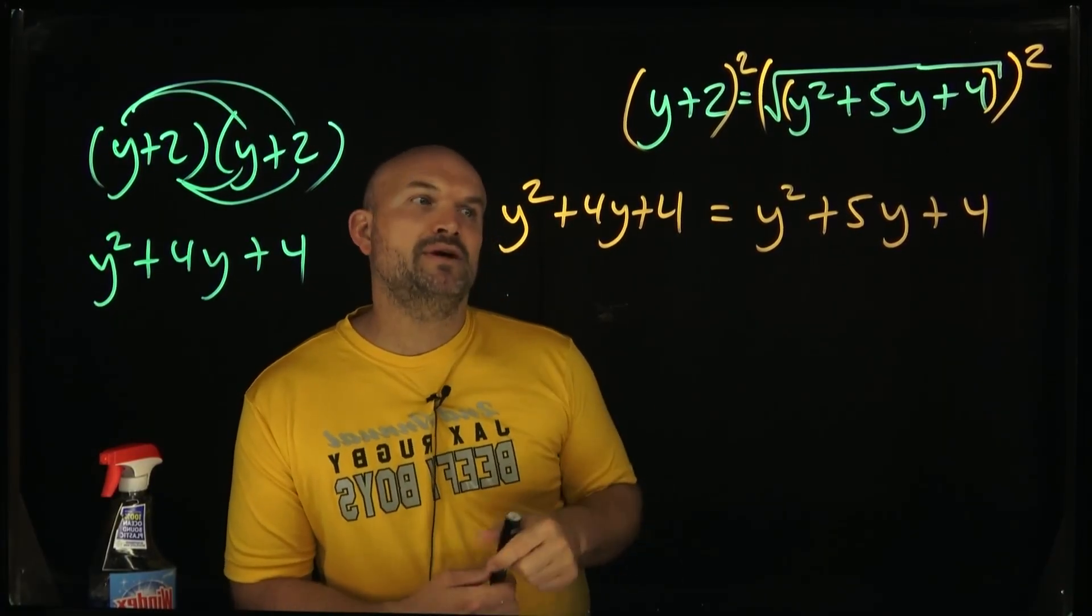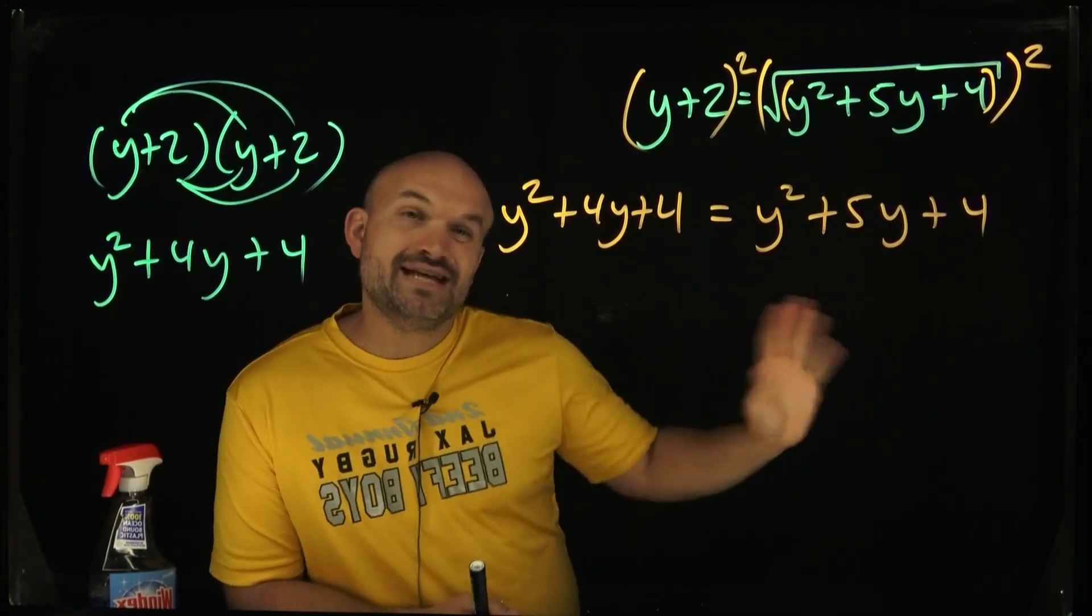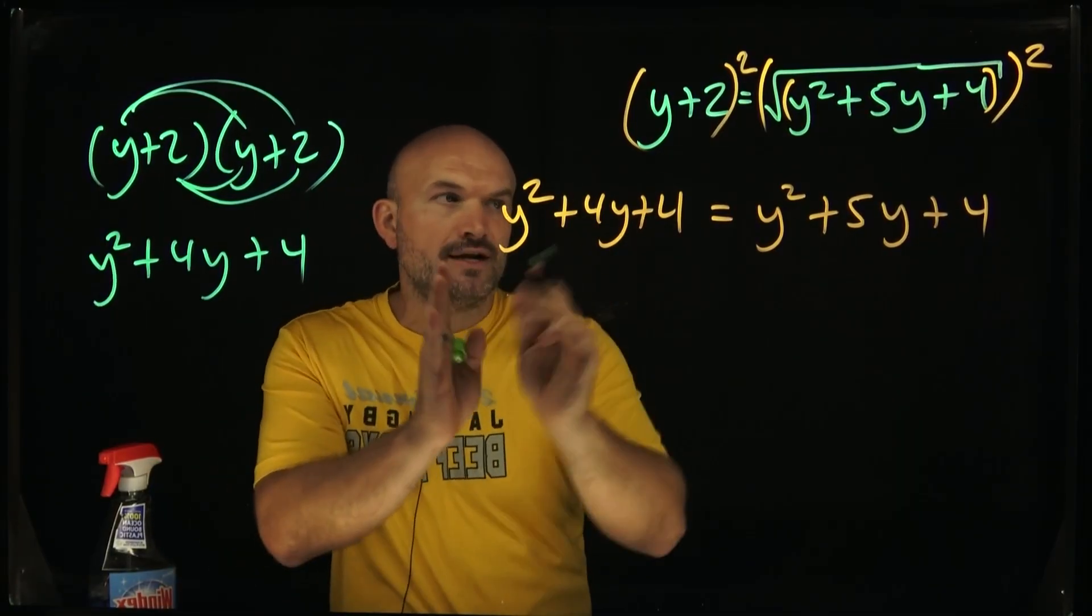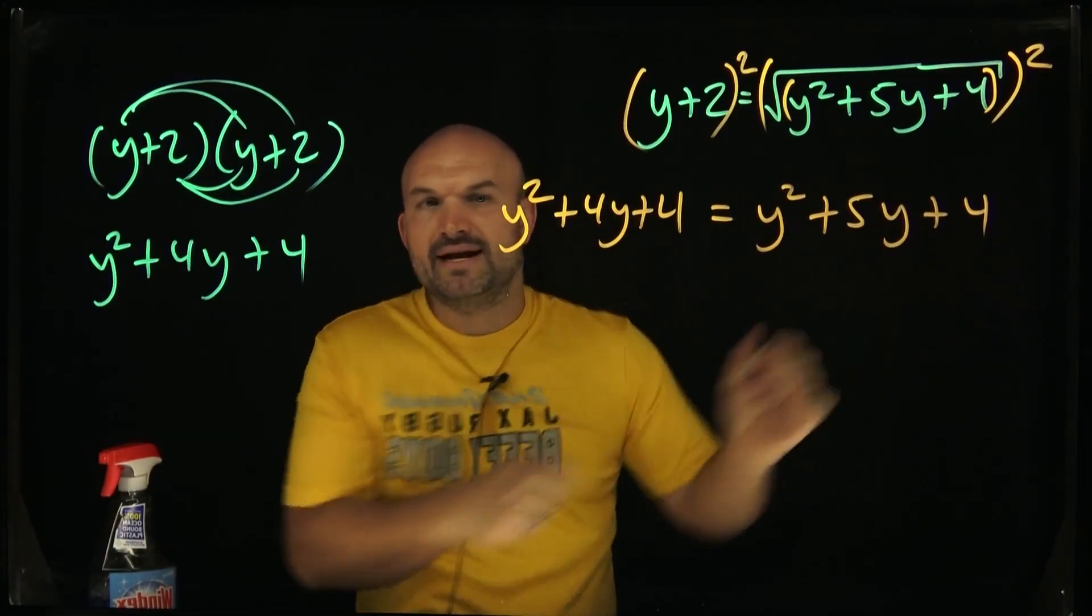The main thing I want to do is get everything over to the same side. Which side that is, it doesn't really matter, you just want it to be equal to zero. So what I'm going to do is I'm going to subtract everything over here and put it and subtract everything over here over to the right hand side.